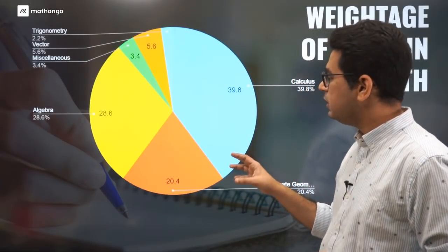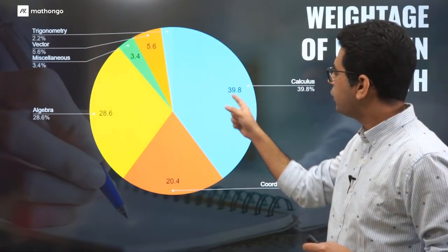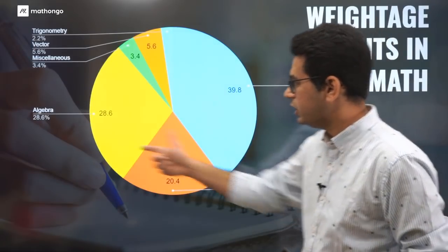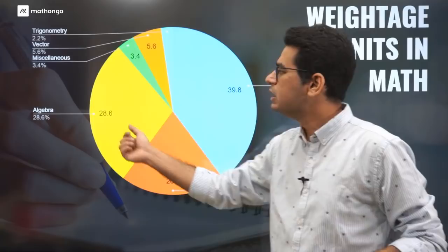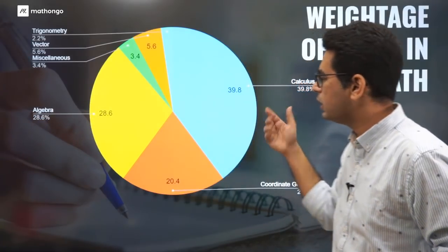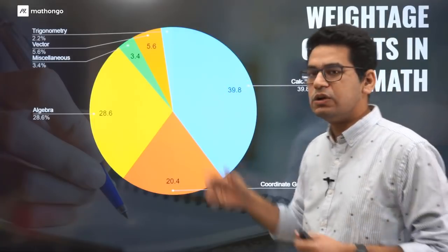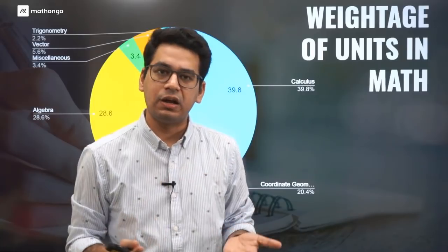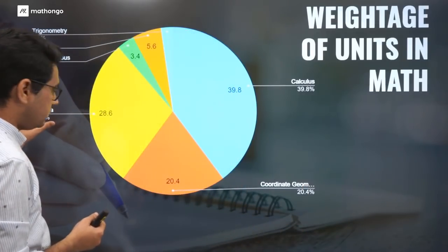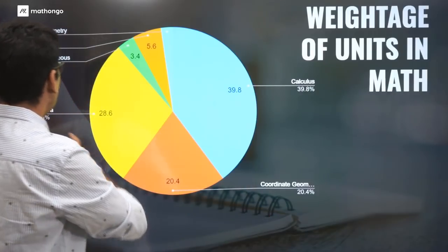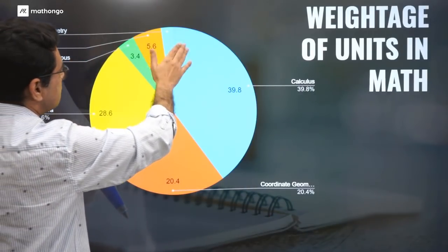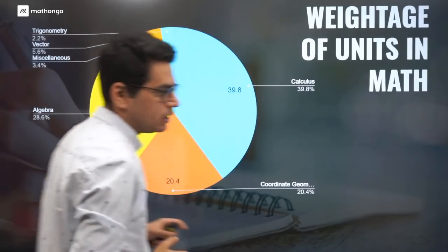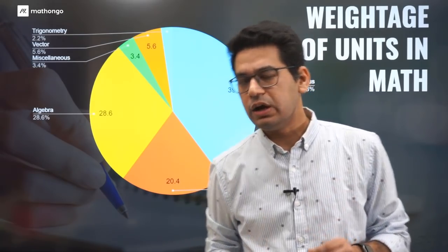Talking about maths, there's a lot of focus on calculus. 40% of your paper consists of calculus. The next big chunk is algebra, which generally happens in any exam. In JEE Main, algebra is sometimes more than calculus, but here there's too much focus on calculus. So if you are really good at calculus, WBJE will become easy to crack for you. 40% weightage for calculus, 29% weightage for algebra, and coordinate geometry 20%. So if we remove trigonometry, vectors, and miscellaneous, which is roughly 10%, and focus on these three, I think you understand what is required.